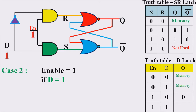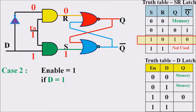Now if D=1 with enable=1: D complement equals 0, so 0 is fed to the first AND gate and 1 is fed to the second AND gate. The first AND gate inputs are 0 and 1, giving output 0. The second AND gate inputs are 1 and 1, giving output 1. Thus S=1 and R=0. Verifying with the SR Latch: S=1, R=0 results in output 1. So if enable=1 and D=1, the output is 1.